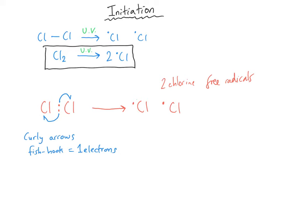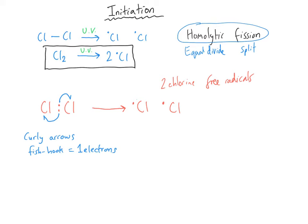This process is called homolytic fission — a name that is very logical if you look at the etymology. Fission means to split, lysis means to divide, and homo means the same — so it is an equal divide, ending in a split between the two atoms in the molecule. They've split equally: it's not one atom taking both electrons; it is one electron going to each atom. So homolytic fission means an equal split.